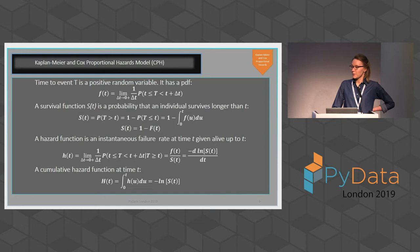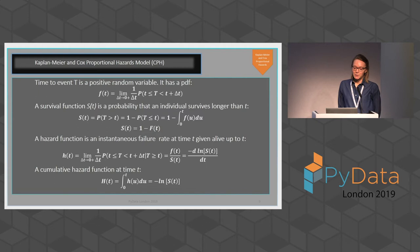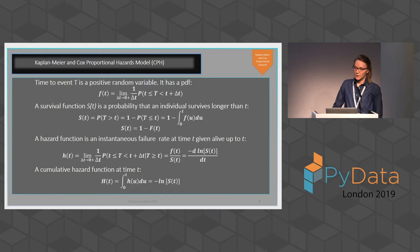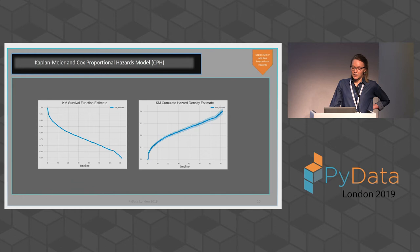This is going to be the slide with the most mathematics, so bear with me. T is a random variable with a positive PDF f(t). One minus the cumulative F(t) gives us the survival probability function. A hazard function is an instantaneous failure rate at time t given survival up to t, and it can be expressed as a derivative of the log of the survival function. The cumulative hazard function is a negative log of the survival function. Here is a graph of the survival function fitted using the Kaplan-Meier estimator, and to the right we have the cumulative hazard function — they are essentially symmetric.